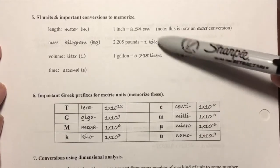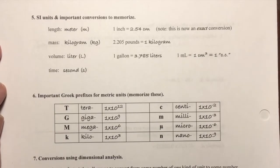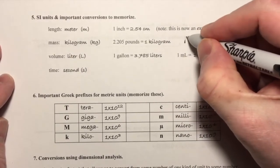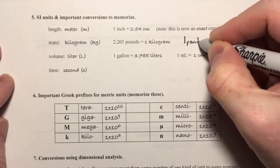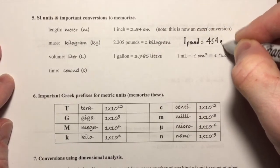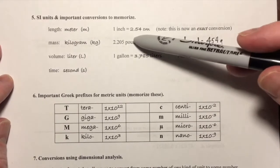For pounds, there's a pound to kilogram conversion: 2.205 pounds equals one kilogram. Another one that is related to this is one pound equals 454 grams. You can learn either of those and they will help you convert between the imperial pound into the metric, either kilograms or grams.